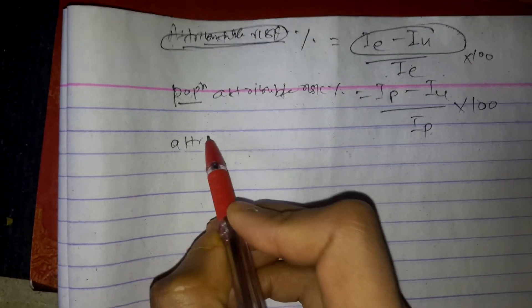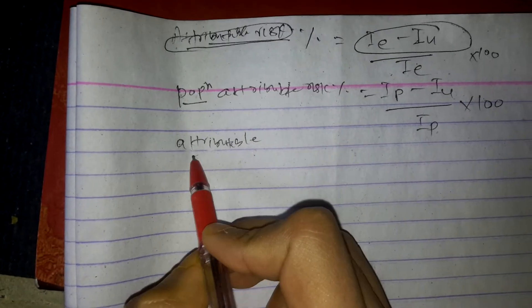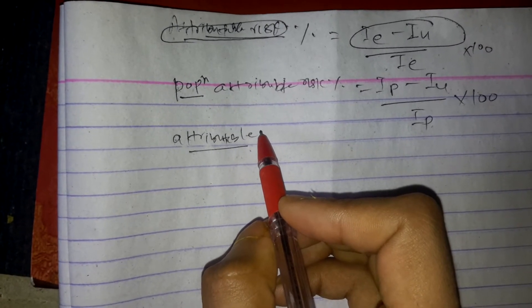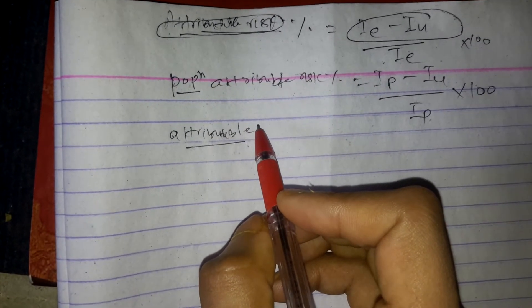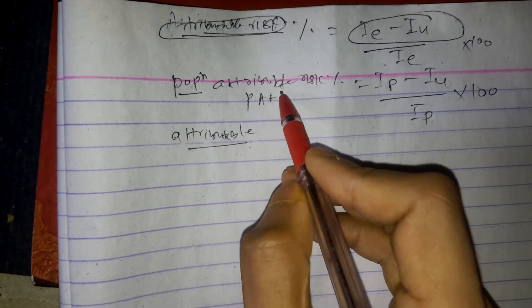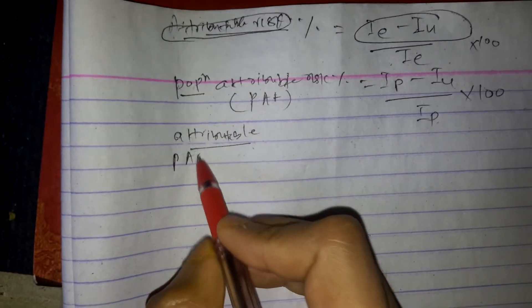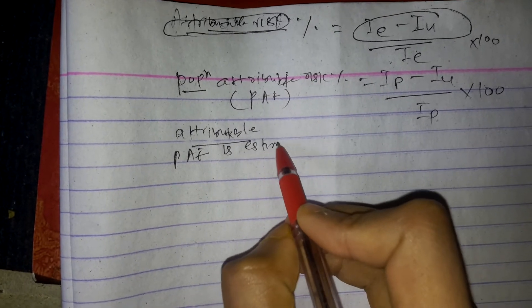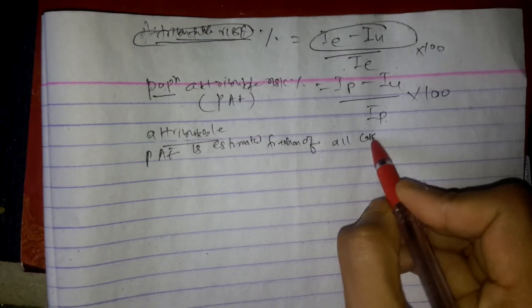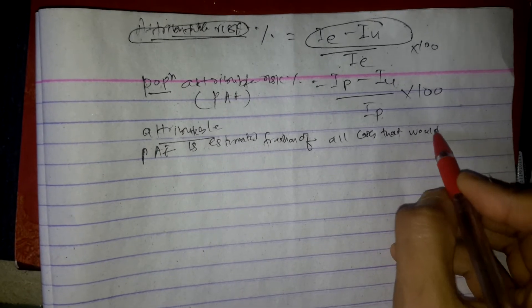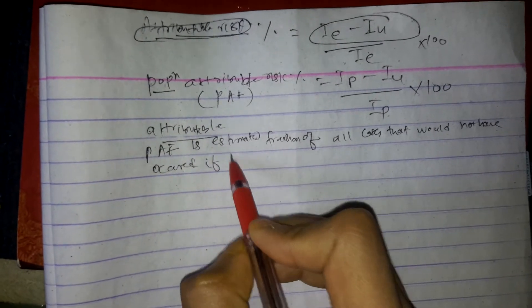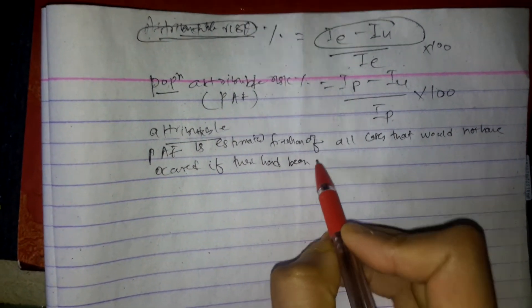Attributable has a causal interpretation. Population attributable fraction is the estimated fraction of all cases that would not have occurred if there had been no exposure. This is also called the population attributable fraction.